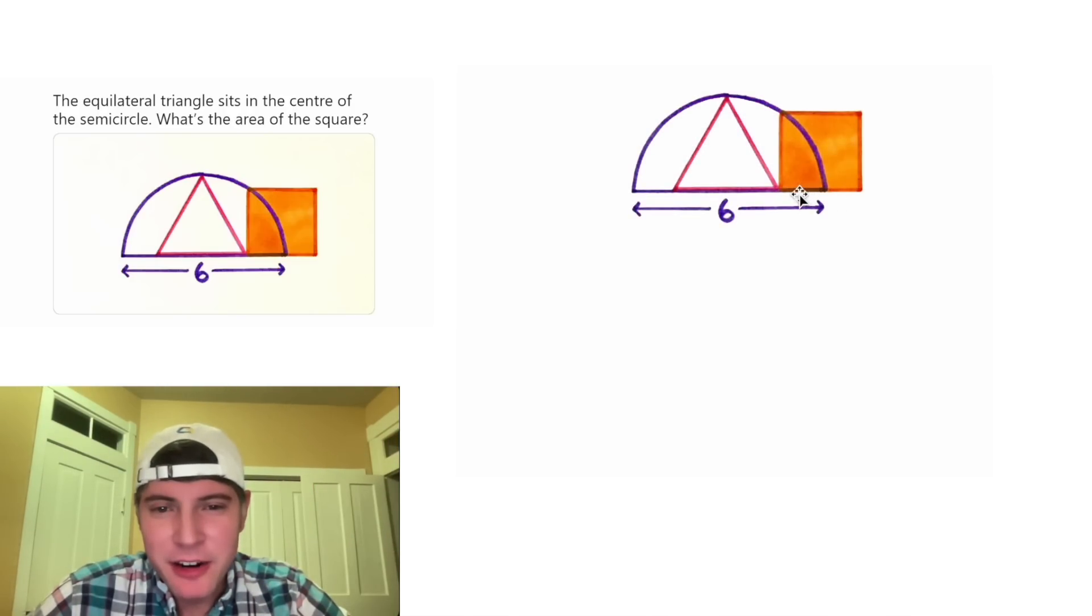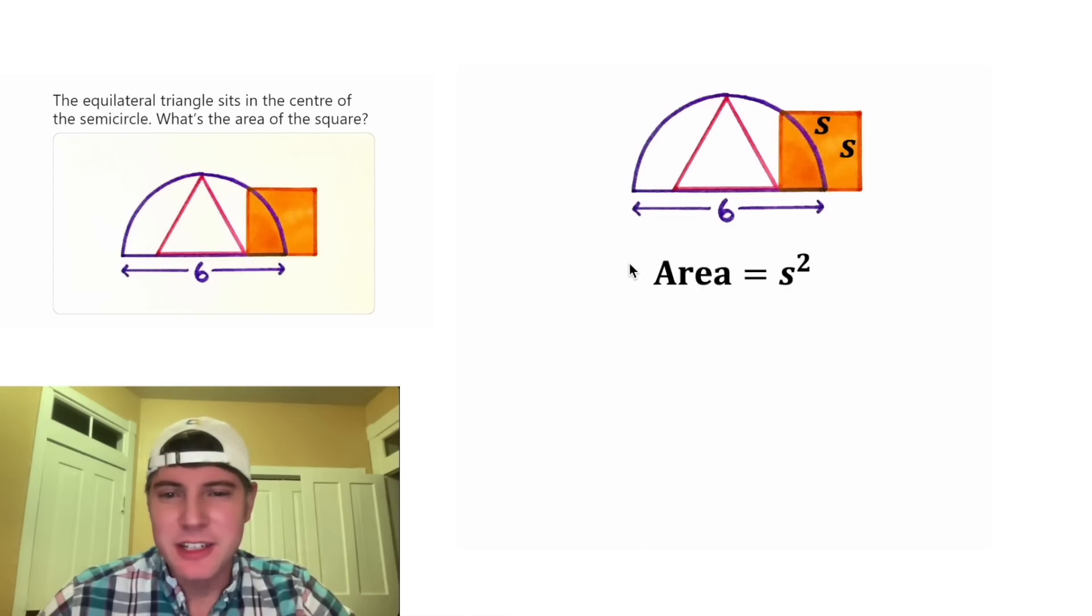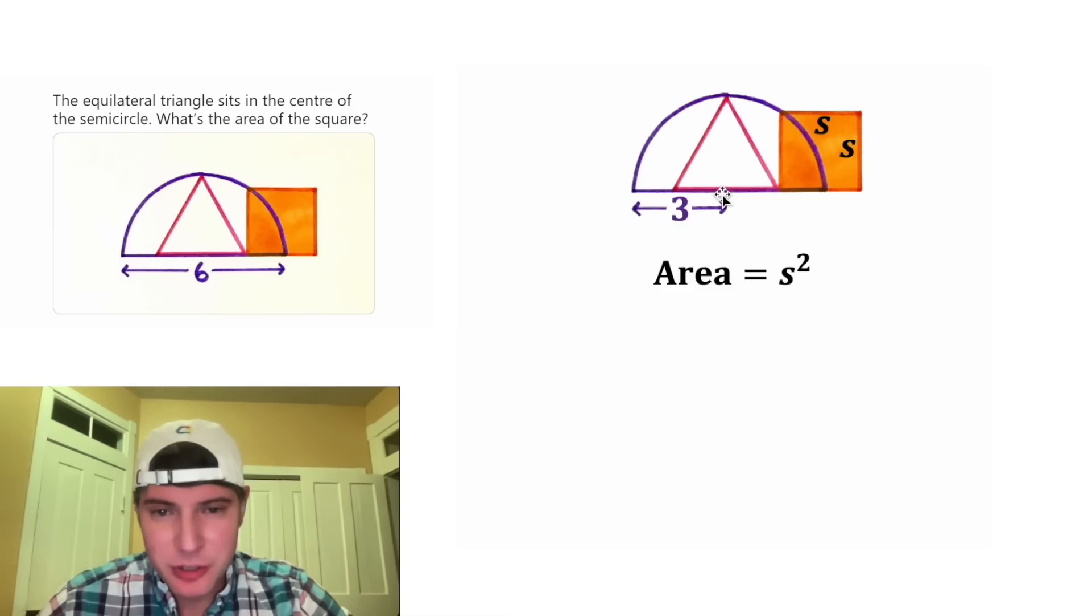We're trying to find the area of this orange square. Let's label the sides of the square S, and the area will be equal to S squared. They're giving us the diameter of the semicircle is equal to 6. That means that the radius would be equal to 3. So if we connect the center of the semicircle to this corner of the square, that would also be equal to 3.